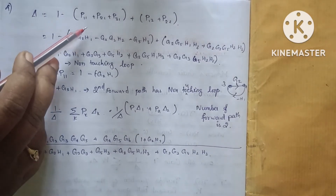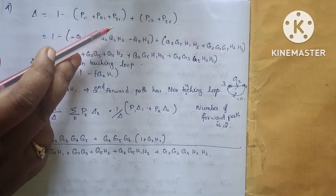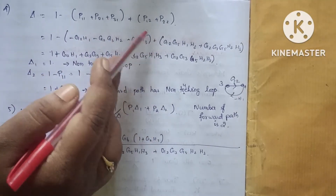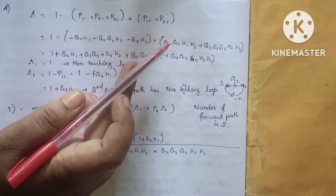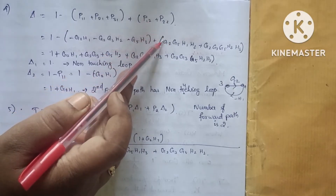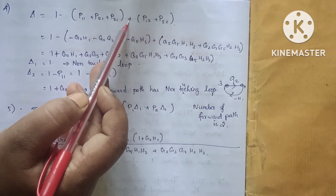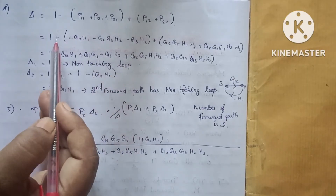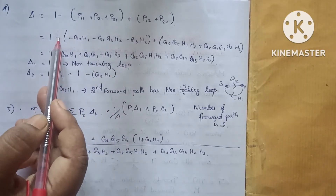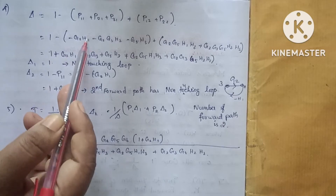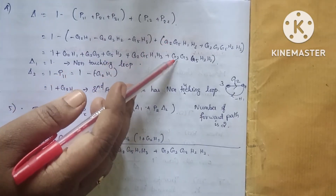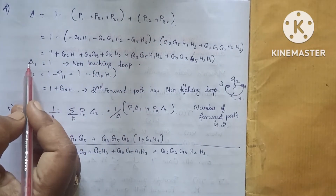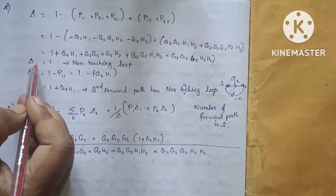Delta equals 1 minus P11, P21, P31 — these are the three individual loop gains. Plus the non-touching loop products. The signs alternate: minus, plus, minus. Then we calculate delta-1 and delta-2 for the first and second forward paths.